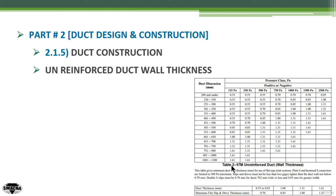This is Table 2-47M in the SMACNA Duct Construction standard for unreinforced duct wall thickness. The entry point for 70 cm falls in the row labeled 651 to 700. This row will be intersected with the pressure classification column.